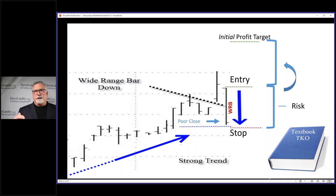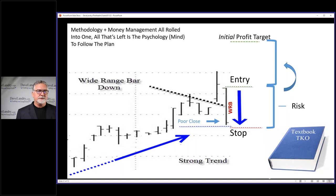I always enter above at least a one bar high. It might be a two or three bar high depending on the close. The beauty of this pattern with the textbook TKO is you've got the methodology which is easy to recognize. You've got a strong trend, a wide range bar down after the market recently made some new highs. You know where your stop and initial profit target are.